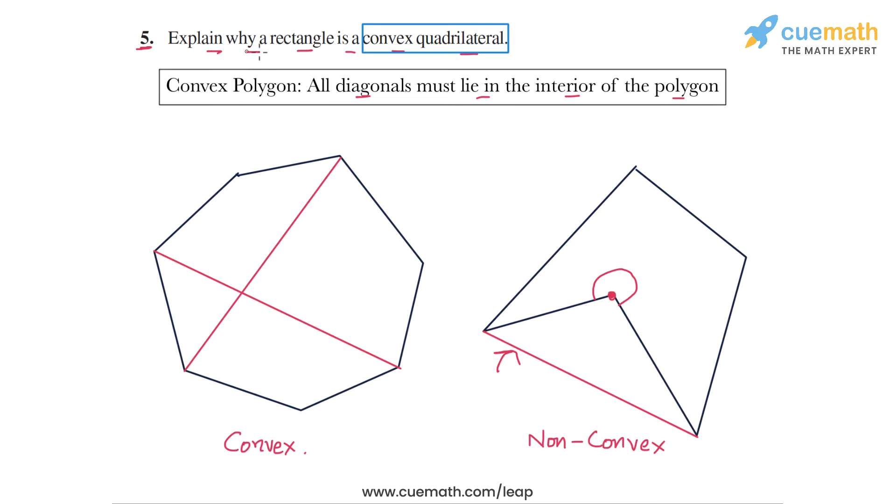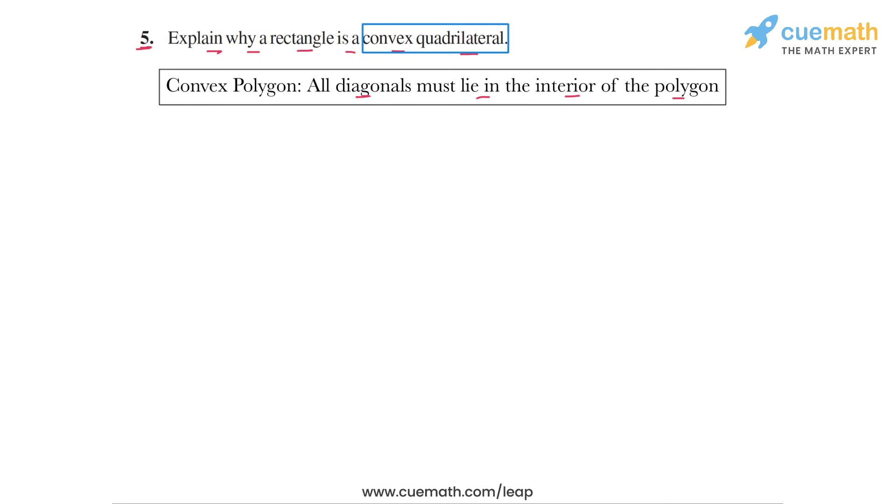So this question is about explaining why a rectangle is a convex quadrilateral. And now after this discussion, the solution should be quite straightforward. Let's look at any rectangle. Let's take this rectangle ABCD.